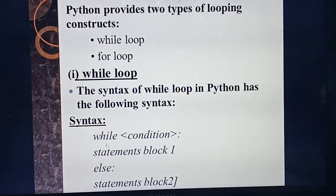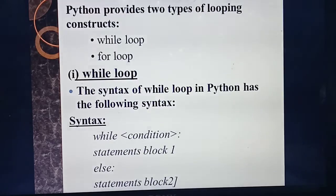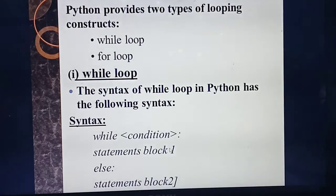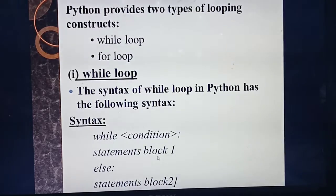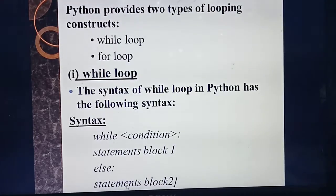The while loop starts with the keyword `while`; the for loop starts with the keyword `for`. Inside the `while`, you give some condition ending with a colon. At the starting of the program inside the while loop you give the condition, then the statements. The loop executes while the condition is true, maybe five or six times. Once the condition gets false, it automatically comes to the `else` part. The `else` also ends with a colon.